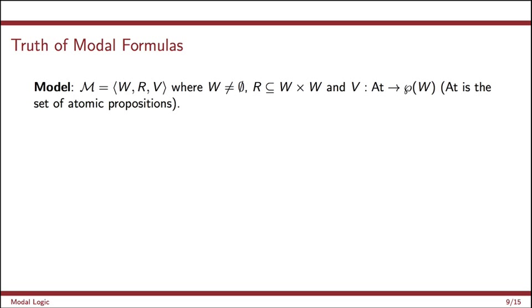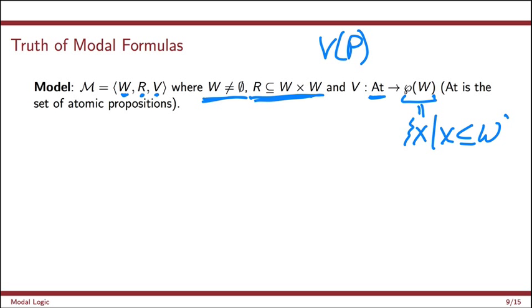A little bit more formally, a model consists of three objects, a non-empty set of states, could be finite or infinite, a relation, and a relation is just a set of ordered pairs, and a way of specifying which atomic propositions are true at which states. So the way we say that is we have a evaluation function that maps. So given any atomic proposition V, V of P is going to be the set of all states. So it's going to be a subset of W. This is equal to the set of all X, such that X is a subset of W. It's the power set of W. The set of all states where we interpret this as meaning P is true. So that's a model.